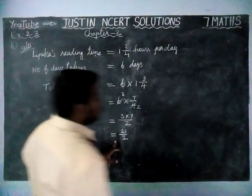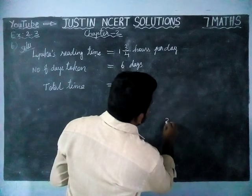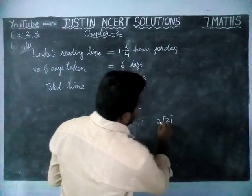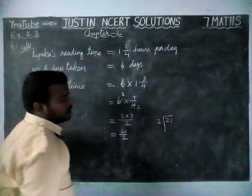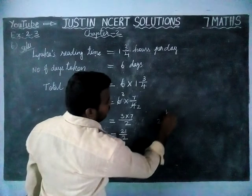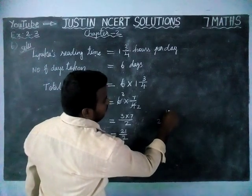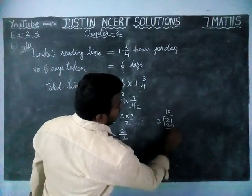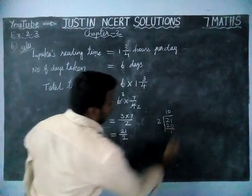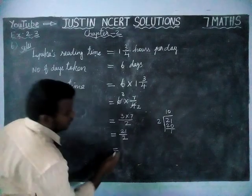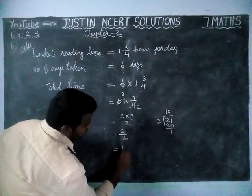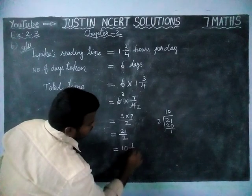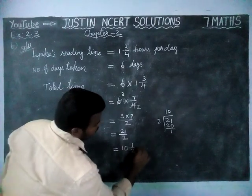We have to convert into mixed fraction. So, 21 divided by 2. In 21, we have 10 twos — 10 twos are 20, and remaining 1. So the answer is 10½ hours.